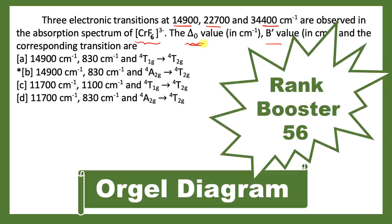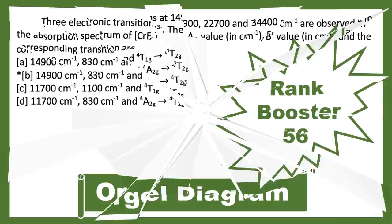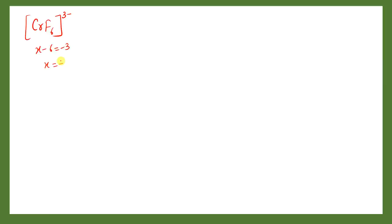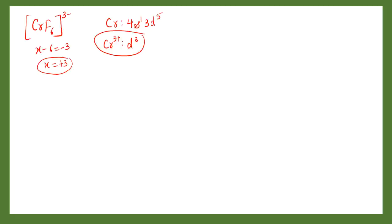We will start with delta naught value and talk about B', and which transition corresponds to which. Let's start with CrF6³⁻ and make an Orgel diagram. In CrF6³⁻, chromium's oxidation state: x minus 6 equals minus 3, so x equals plus 3 — chromium is in +3 oxidation state. Chromium's electronic configuration is 4s¹3d⁵, so Cr³⁺ gives us a d³ configuration.